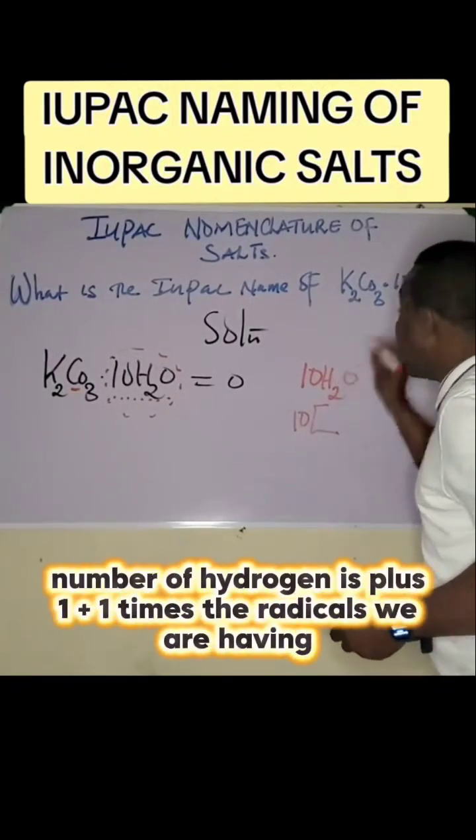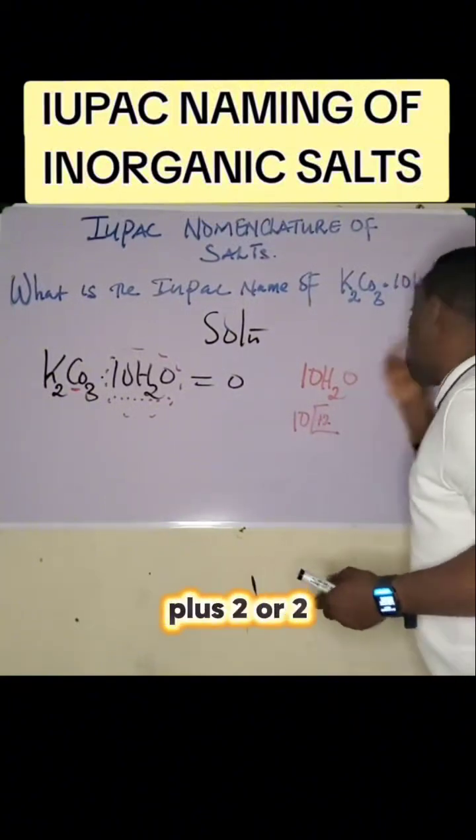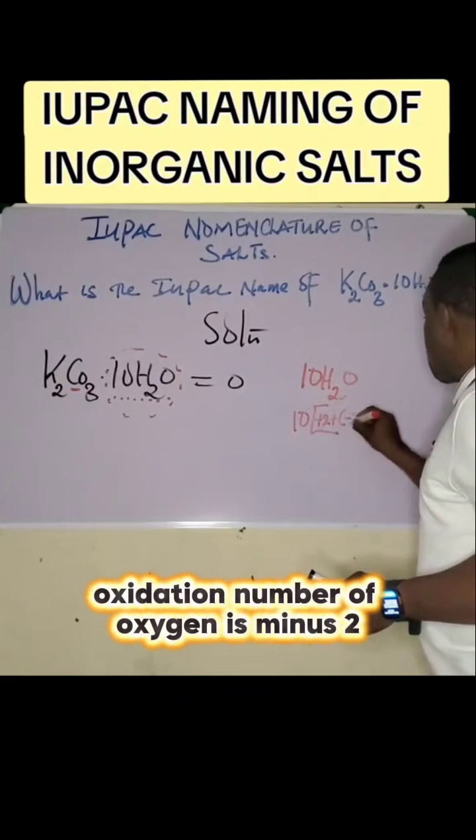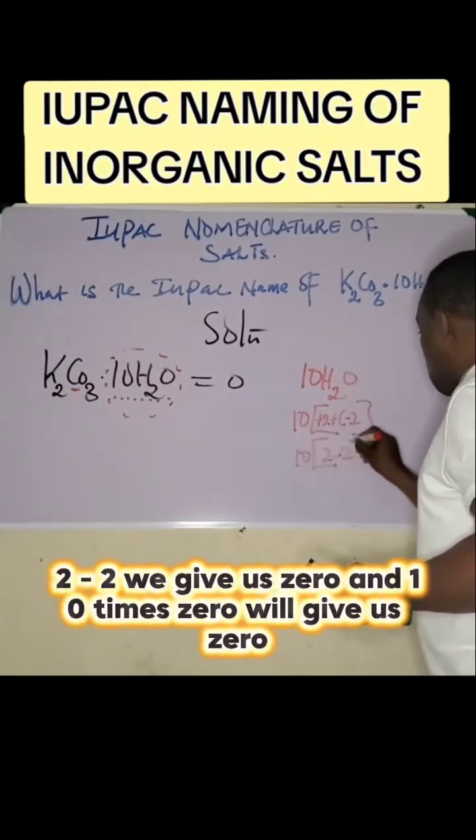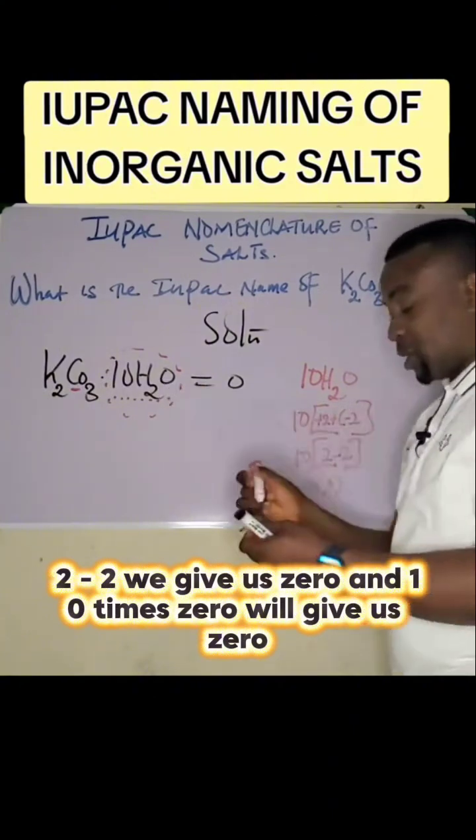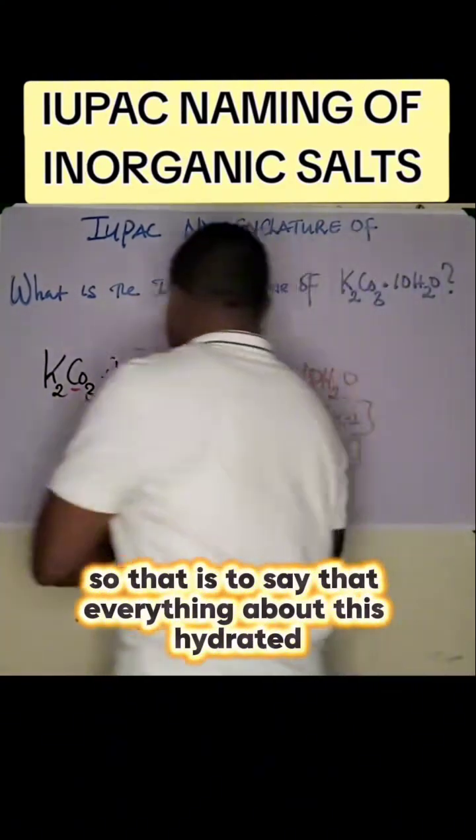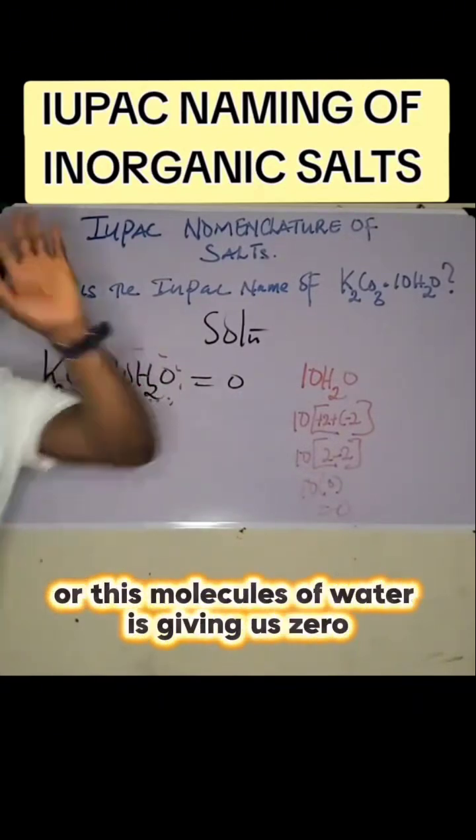Plus one times two radicals gives us plus two. Oxidation number of oxygen is minus two. If you open the bracket, two minus two gives us zero. And 10 times zero gives us zero. So everything about these molecules of water is giving us zero.